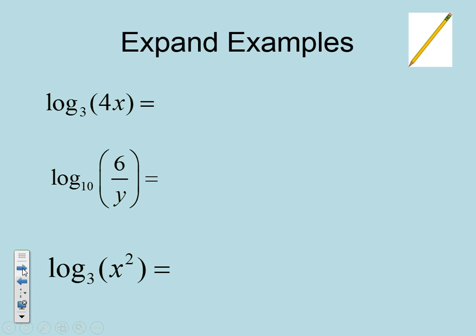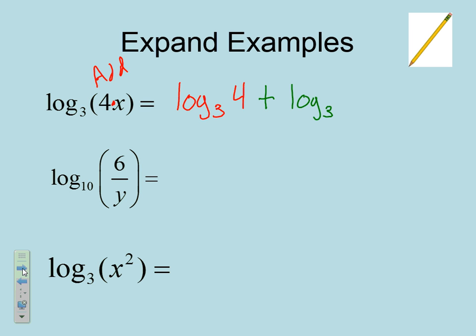Now we're going to go through some examples of expanding and condensing. First thing we're going to do is expand. Our first one — we are multiplying, so we are going to expand by adding. We're going to write log base 3, and then whatever number or variable comes first we write first, so we have 4. We only do one variable or number per part, so then we put plus log base 3 of x. That's the expanded form.